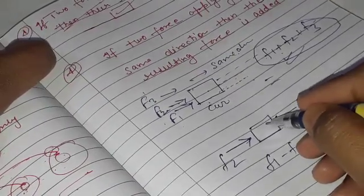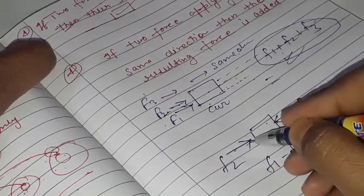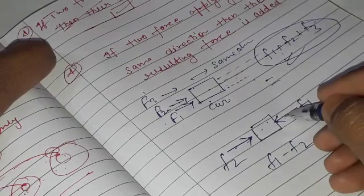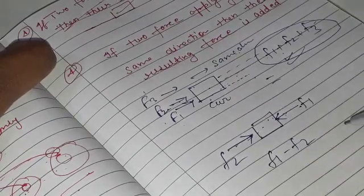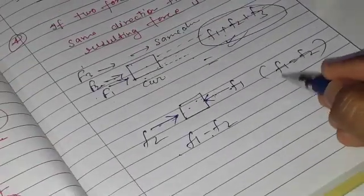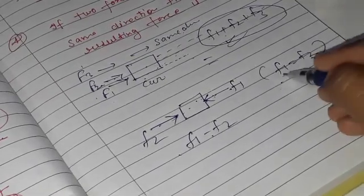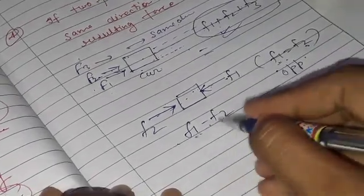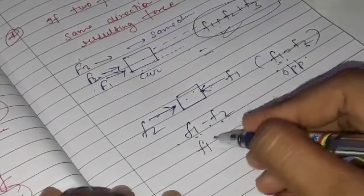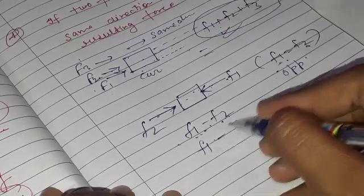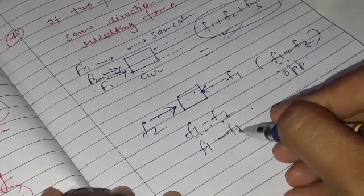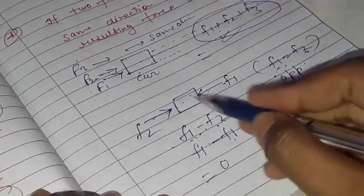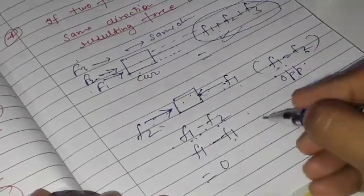However, if forces are applied in different directions, they are subtracted. Suppose you and your friend push the same car from opposite sides — the car may not move at all, or it moves toward where more force is applied. If F1 equals F2, meaning both forces are equal and opposite, then F1 minus F2 equals zero. So equal and opposite forces result in a net force of zero.